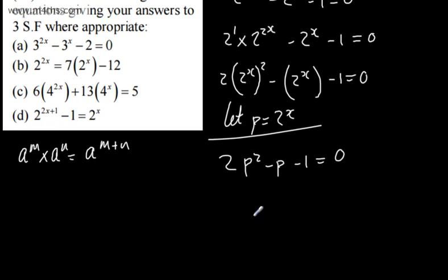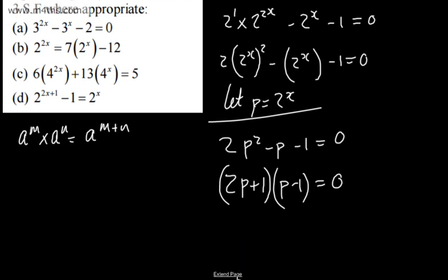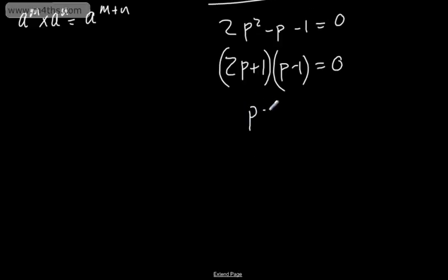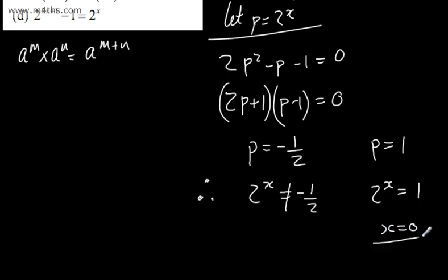That will factor as 2p plus 1 times p minus 1 equals 0. Let's check: 2p squared minus 2p plus p minus 1 — yes, that's correct. So p equals negative 1 half or p equals 1. Therefore 2 to the x equals negative 1 half, which can never be true for real values, or 2 to the x equals 1. What power is 2 raised by to get 1? The answer is x equals 0. So x equals 0 is the only solution. 2 to the power of 0 is 1.